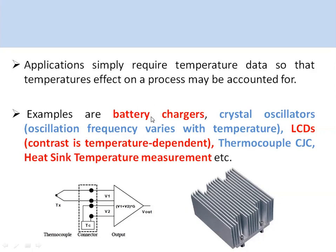Other examples include battery chargers, where charging needs to be temperature compensated. Similarly, crystal oscillators require temperature compensation since crystal frequency varies with temperature. LCDs also require contrast compensation as contrast is temperature dependent, and in the cold junction compensation of thermocouples, the cold junction temperature needs to be measured and compensated.